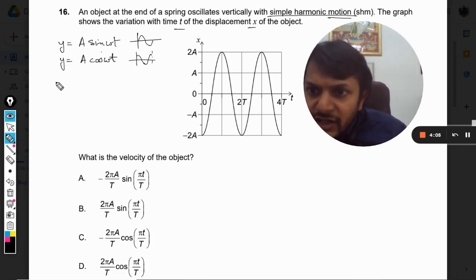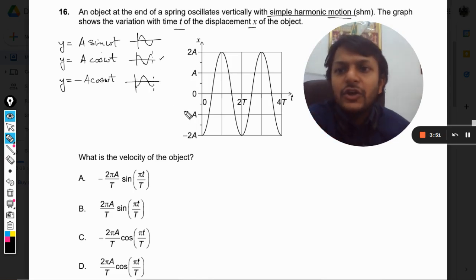This graph will be y equals minus A cos omega t, and the graph will be somewhat like this. It will be the mirror image of the cos graph. So this graph shown here in the question is y equals minus A cos omega t. The only thing is we don't know what is A and we don't know what is omega, so we would be substituting those values once we find them.